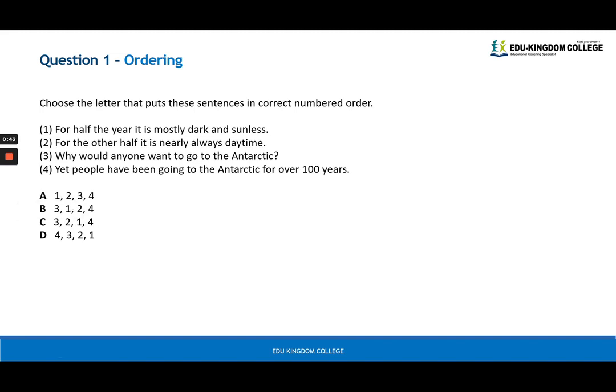For me, the first one would be number three, and the reason being number three provides a starting point as to what we are going to be exploring, which is the Antarctic. Why would anyone go to the Antarctic? And then after that, the next statement would be number one. For half the year it is mostly dark and sunless, so this is linking to this idea of why would anyone want to go to Antarctic. Then we keep following this train of thought and linking the ideas together. The next one would be number two, for the other half it is nearly always daytime. And now we're wrapping up with four: yet, despite this, people have been going to the Antarctic for over a hundred years. So that sequence would be option B.